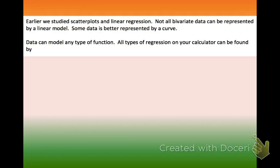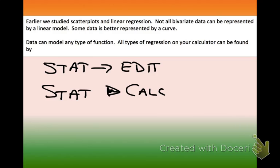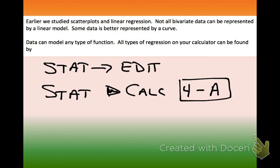We talked about regressions a little earlier in the year. You can find all types of regressions on your calculator by first doing STAT and going to Edit to enter all your data in, then pushing STAT, pushing your arrow over to Calculate. As you look down the list, everything from 4 all the way down to A are your different regressions.